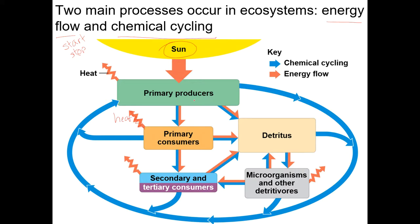Consider grass as the primary producers, bunny rabbits as primary consumers, and a fox as the secondary consumer. The bunny gets energy from grass, and if eaten transfers energy to the fox. But in the meantime bunnies hop around, look for food, make body heat as endotherms, care for their young — all of that living activity eventually releases energy as heat. The energy isn't destroyed, but it's spread out through the environment, increasing entropy.